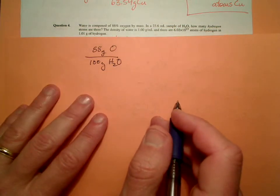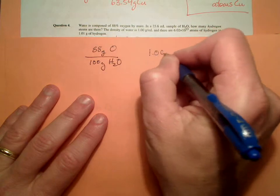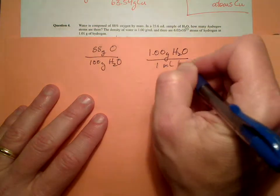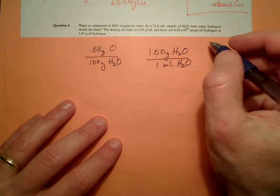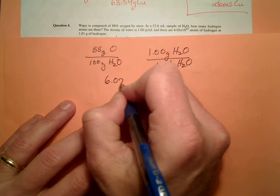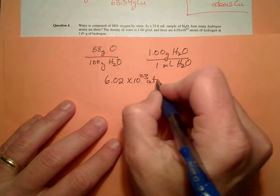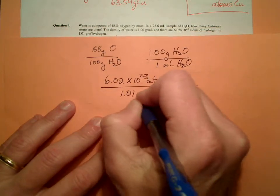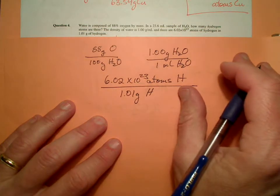We also have 1.00 grams of water in 1 milliliter of water. That's a conversion. We also have 6.02 times 10 to the 23rd atoms of hydrogen in 1.01 grams of hydrogen. So we have those three conversions that I can see here.